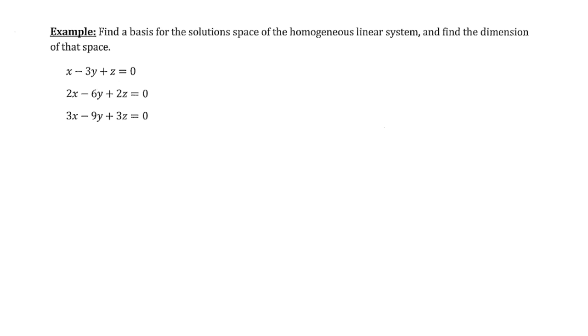and this is the third and final installment of videos for the Section 4.5 note handout. So in this video, we're going to find a basis for the solution space of the homogeneous linear system and then find the dimension of that space. Hopefully, it's clear that we have a homogeneous linear system here, all the constant values are 0.